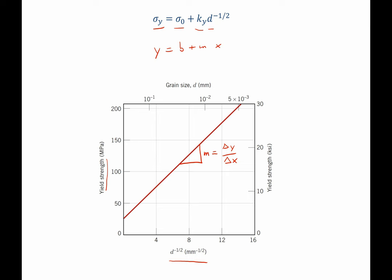So that allows us to solve for k-sub-y. We simply need to pick out two points so that we can determine our change in y over our change in x. For example, right here, I have the point 4 and 75, and up here, I have the point 12 and 175. Let's use those points to determine our slope for this question.